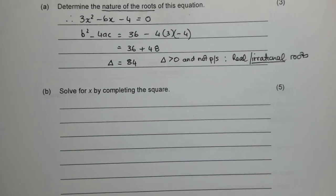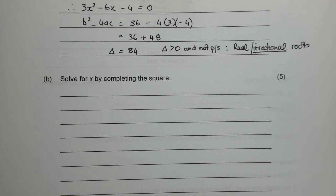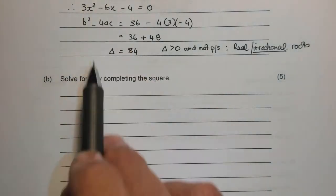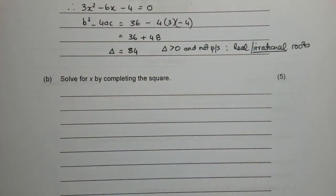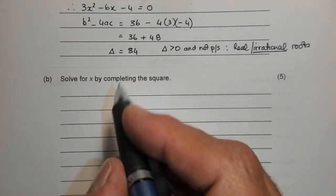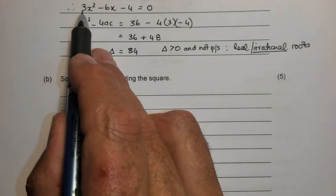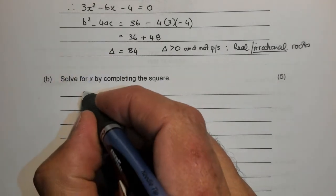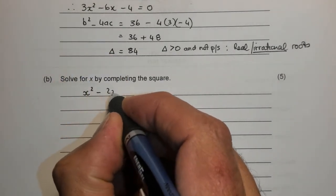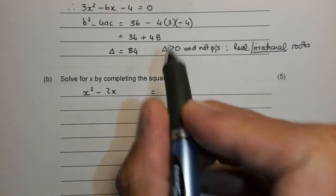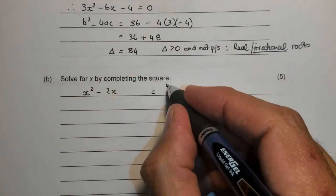Then we continue. Now take that equation for 5 marks and solve it by completing the square. We divide both sides by 3 here to get the leading term to be a 1. So we get x squared minus 2x, and let's throw the 4 over, becomes 4 over 3.